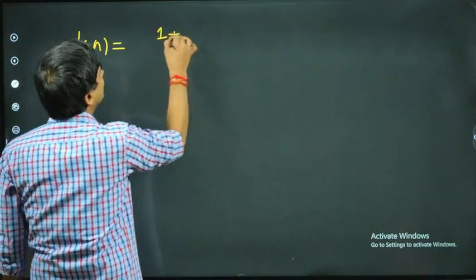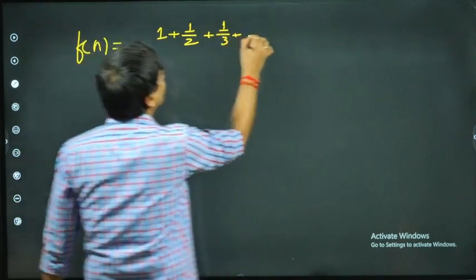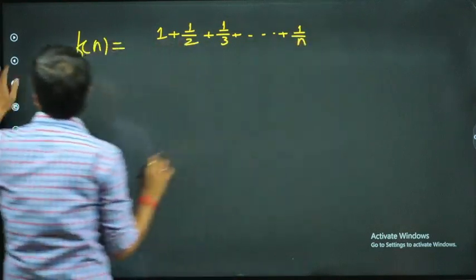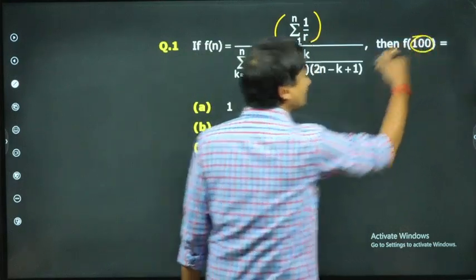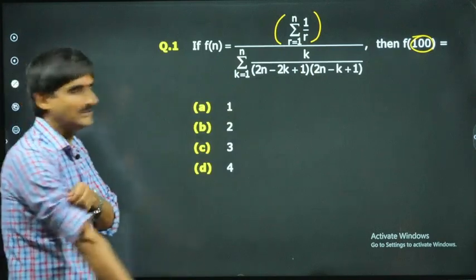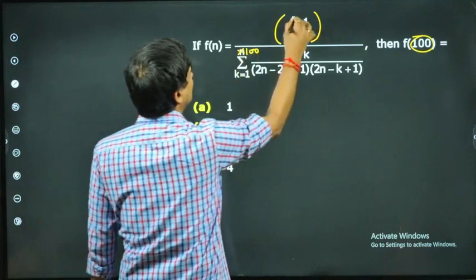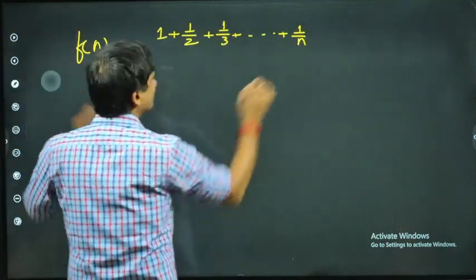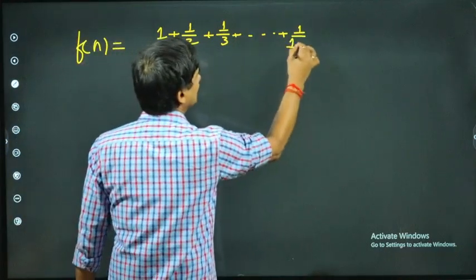So it will be 1 + 1/2 + 1/3 + ... + 1/n. Since we need f(100), instead of talking in terms of n, let's directly do it for 100. So I'll take it to 100 — both the numerator and denominator will go till 100.